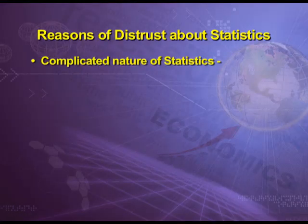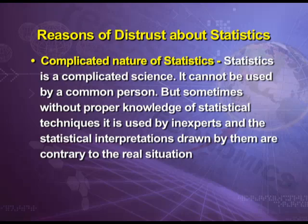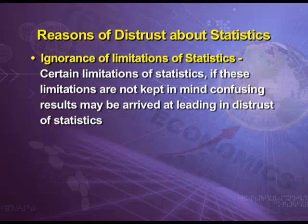The third reason is the complicated nature of statistics. Statistics is a complicated science and cannot be used by a common person. But sometimes, without proper knowledge of statistical techniques, it is used by inexpert persons, and the statistical interpretations drawn by them are contrary to the real situation, becoming a reason for distrust. But in fact, we should see that this is the misuse of statistics by inexpert persons — this is not a limitation in statistics itself. The fourth reason for distrust is ignorance of the limitations of statistics. If these limitations are not kept in mind, confusing results may be arrived at, leading to distrust of statistics.